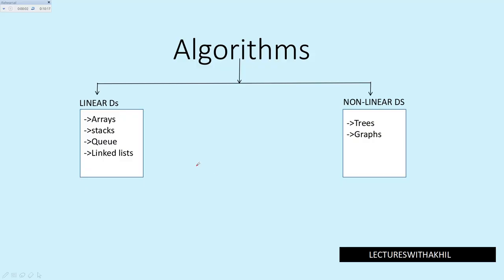Now we can see how data structure is divided. Data structure is divided into linear data structures and non-linear data structures. Linear means an element is connected to another element. Non-linear means an element is connected to n number of elements.